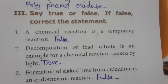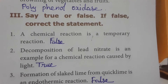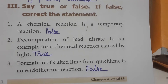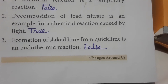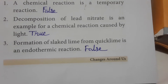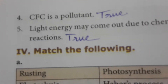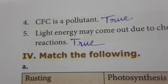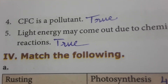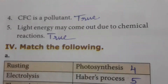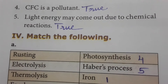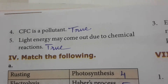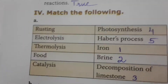True or False section: A chemical reaction is a temporary reaction — False. Decomposition of lead nitrate is an example of a chemical reaction caused by light — True. Formation of slaked lime from quicklime is an endothermic reaction — False, because it is a purely exothermic reaction. CFC is a pollutant — True; CFC (chlorofluorocarbon) is frequently used in refrigerators and coolants. Light energy may come out due to chemical reactions — True, because when you ignite a matchstick or candle, you get light from them.